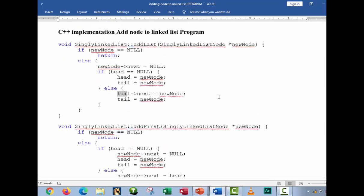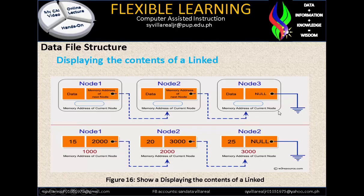These are the codes of the implementation in C++ by adding nodes — node is the same as data. Next, displaying the content of a linked list. Figure 16 shows displaying the content of a linked list: Node 1, Node 2, Node 3. You will notice the explanation here is that there is a data and there is a memory address of the next node. It means this is what you call the sequence. The data right here has a sequence leading to the next node, and the same process continues. There is data and the memory address of the next node.